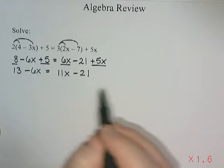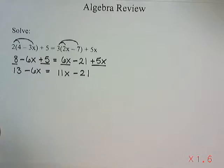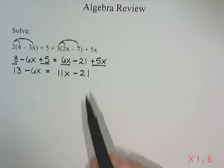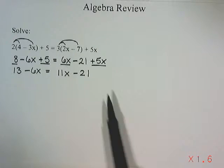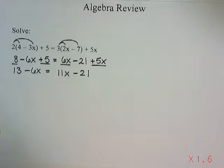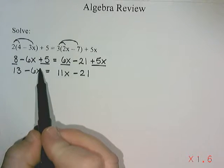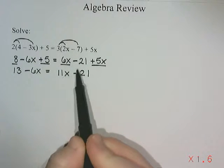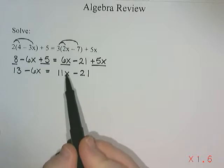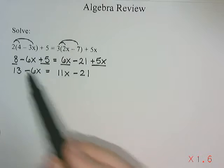Once I get to this step here, what I want to do is try to move my x's all to one side. So I have a choice. I could either move the 6x over to the right, or I could move the 11x over to the left.